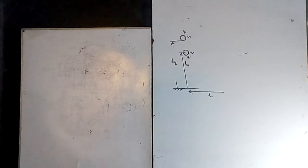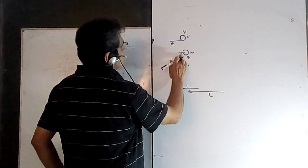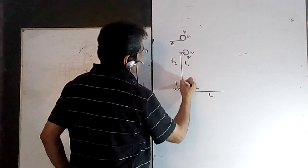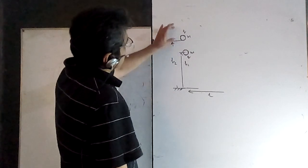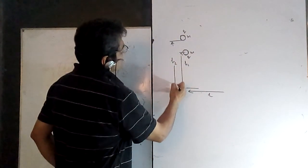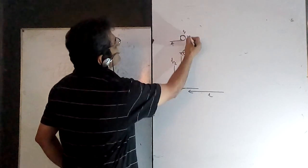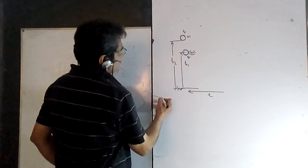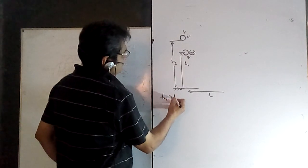In this lecture we will cover an interesting problem which is based on the center of mass and projectile motion. We have two masses: one is at height h1 and another mass is at height h2, where h2 is greater than h1.